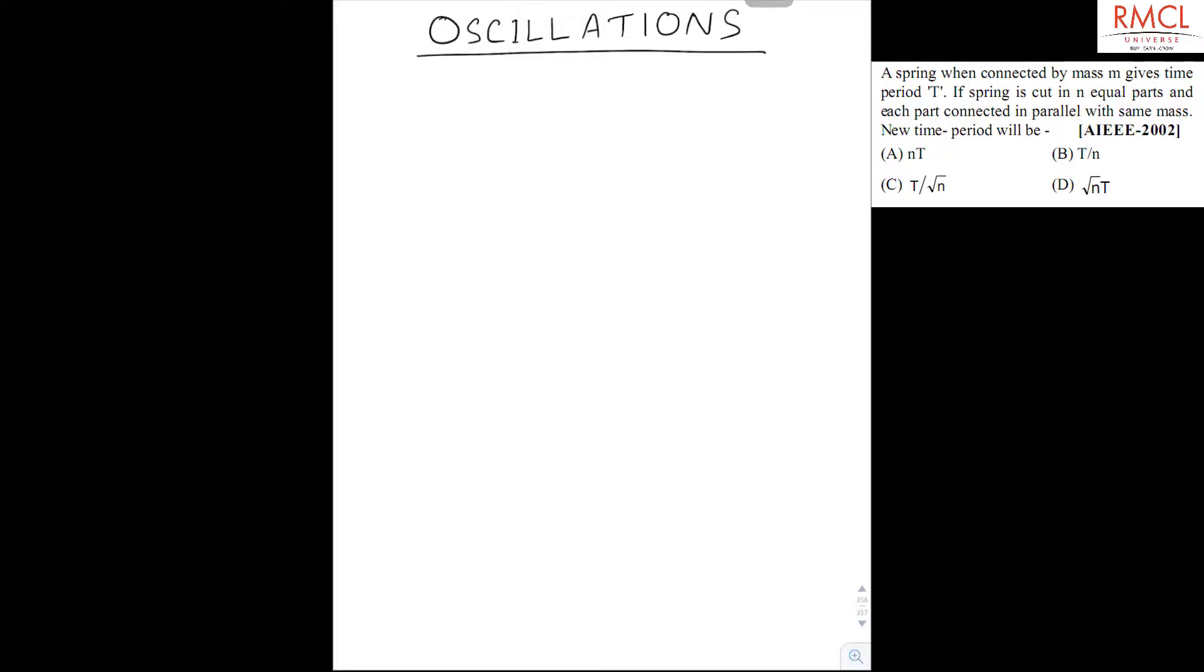These questions are of oscillations and this question is from AREEE 2002. A spring when connected by mass M gives time period T. If spring is cut in N equal parts and each part connected in parallel with same mass, new time period will be.